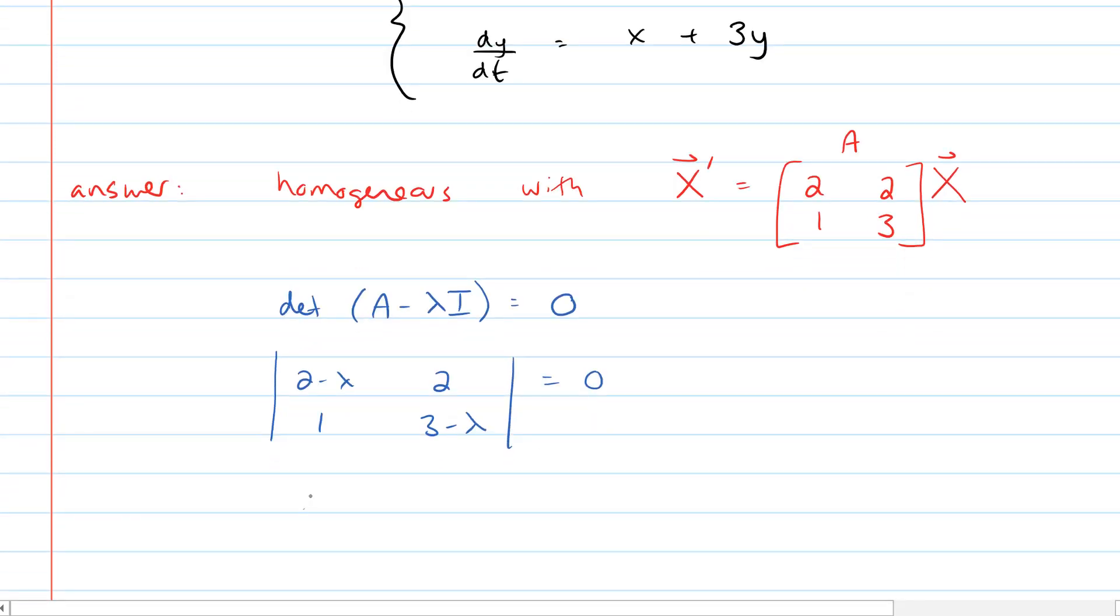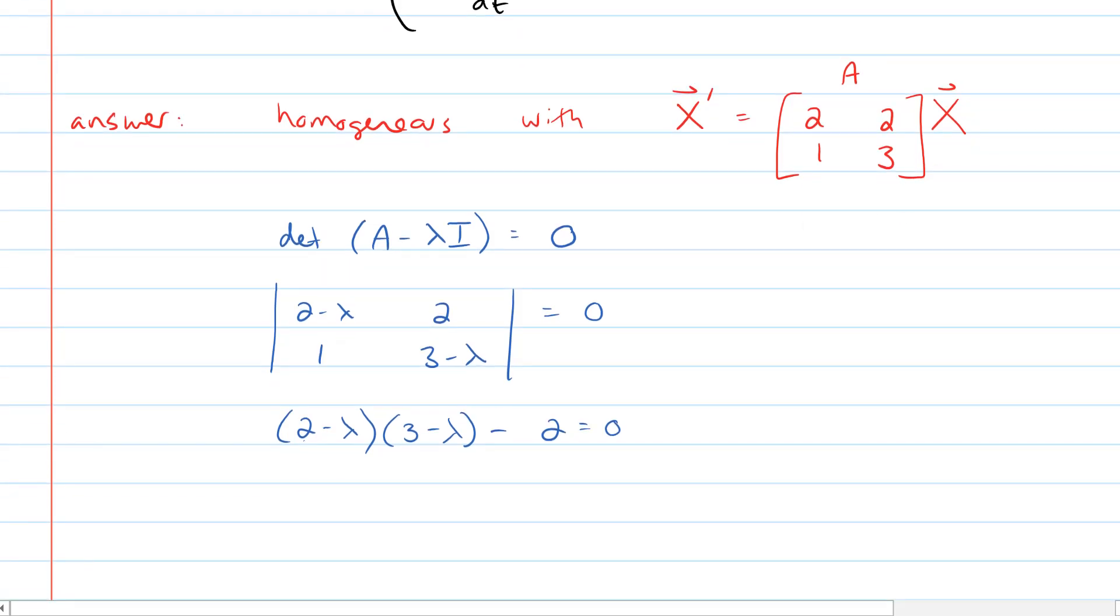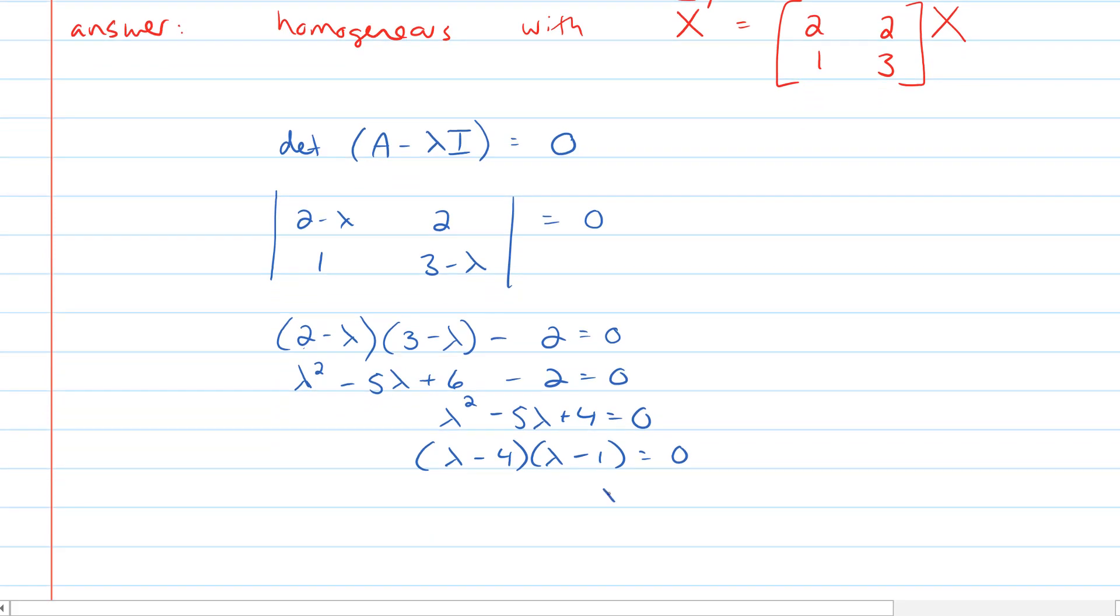And so we get, writing out the determinant, 2 minus lambda times 3 minus lambda minus 2 is equal to 0. A little bit of foiling yields lambda squared minus 5 lambda plus 6 minus 2 is equal to 0. And we get that lambda squared minus 5 lambda plus 4 is equal to 0, which factors to lambda minus 4, lambda minus 1 is equal to 0. And that gives us our eigenvalues of 1 and 4. There are two of them, they're not repeated in any way, so this is the distinct case.